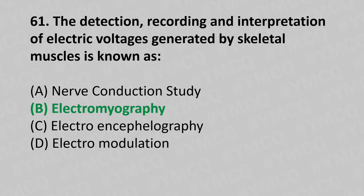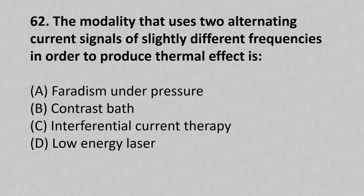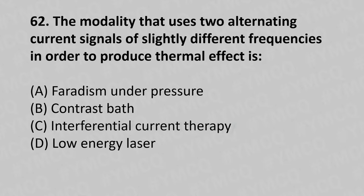Moving to our 62nd question. The modality that uses two alternating current signals of slightly different frequency in order to produce thermal effect is: Option A, Faradism under pressure; Option B, Contrast bath; Option C, Interferential current therapy; Option D, Low energy laser. And the answer is Option C, Interferential current therapy.